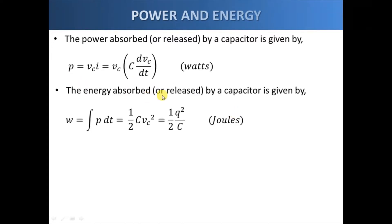So the energy absorbed or released by the capacitor can be derived by simply integrating the formula for p dt. So since p is given by this one, we can use this and plug it here and you will get 1/2 C v_c squared. And since we have a relationship q equals Cv_c, we can also express the energy absorbed or released by the capacitor in terms of the q that is being stored by the capacitor.